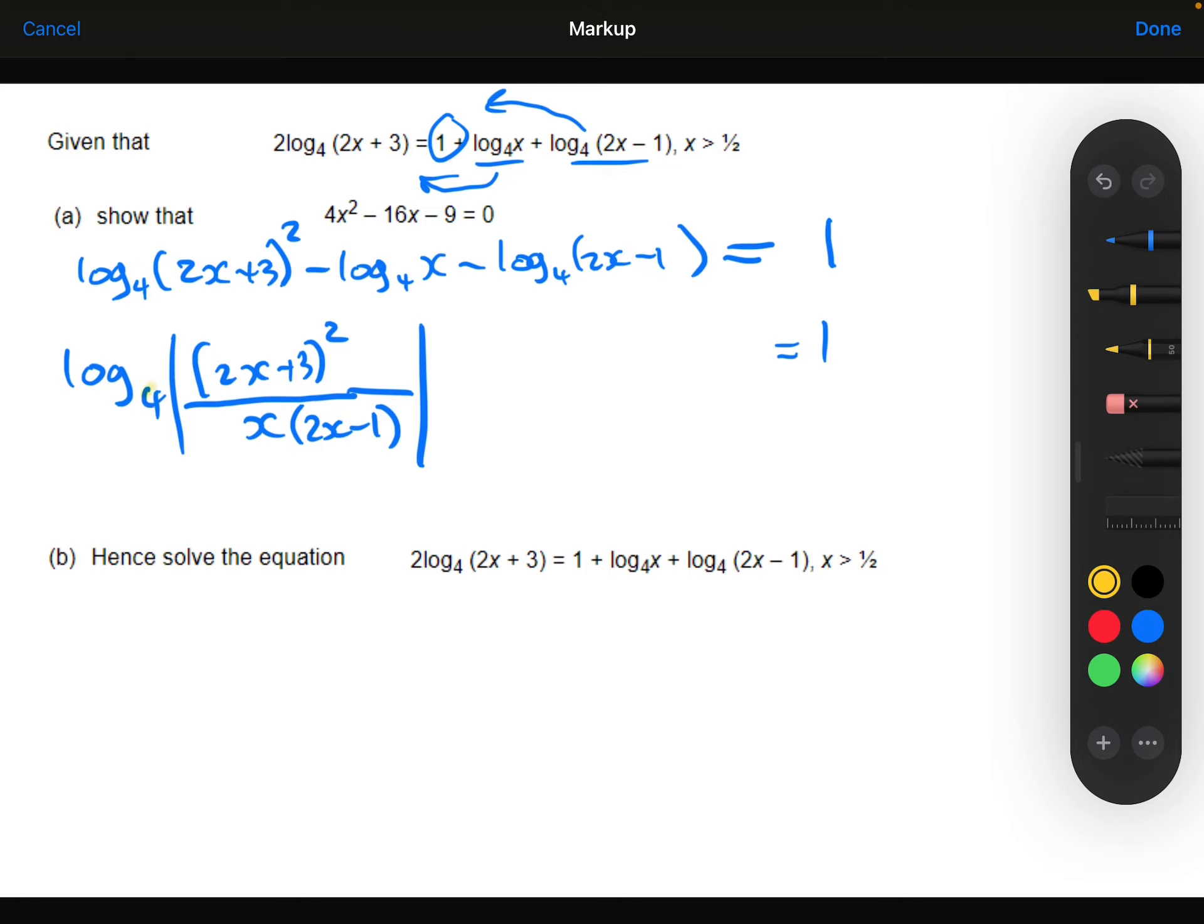So it's log base 4, so I need to do 4 to the power on both sides. On the left-hand side, I've just removed the logarithm, so I'm just going to be left with everything that was on the inside there. And on the right-hand side, I've got 4 to the power of 1, which is just 4.